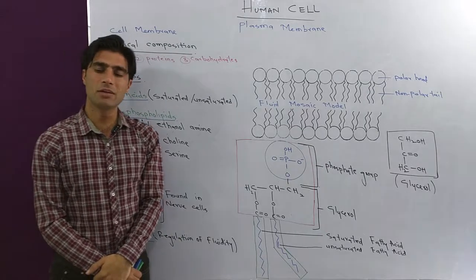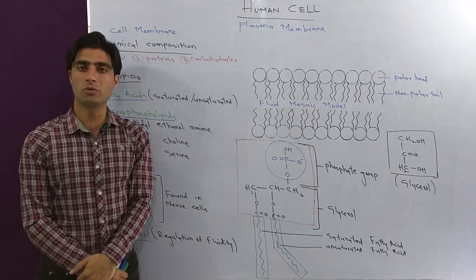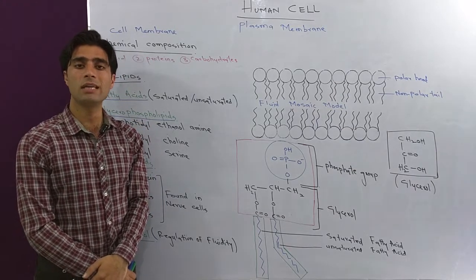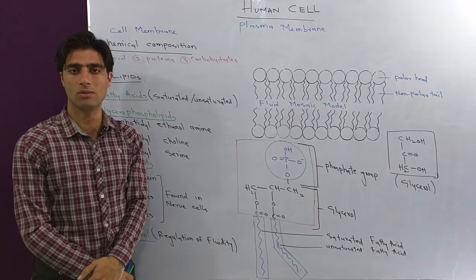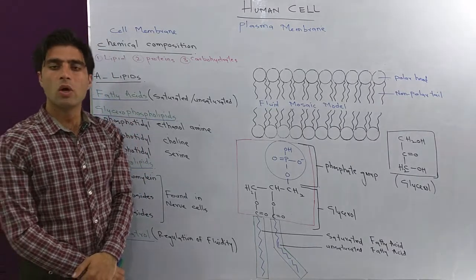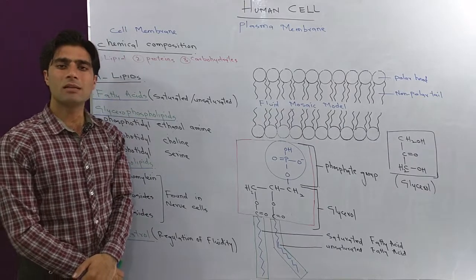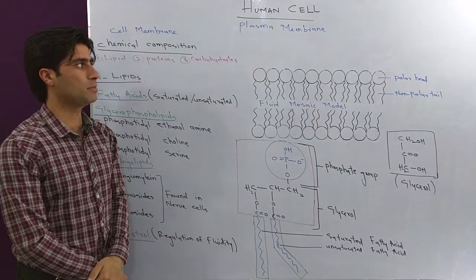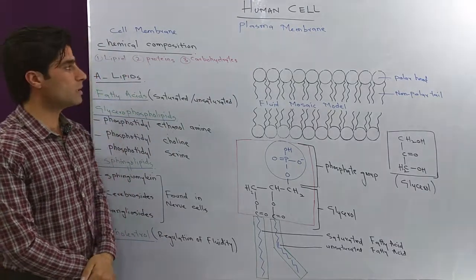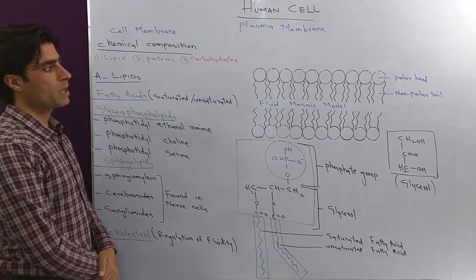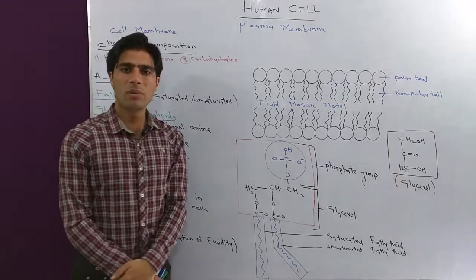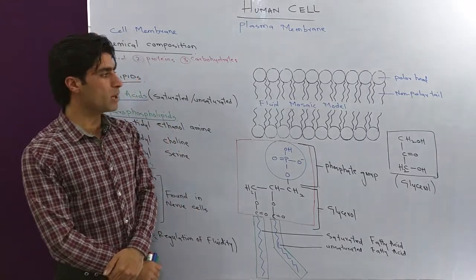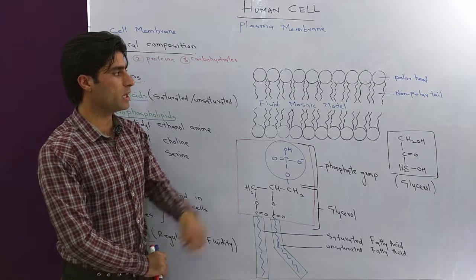Now we will move towards the chemical composition of plasma membrane. As I told you in my introduction to biochemistry lecture, biochemistry deals with the chemical composition of living cells and tissues. Among the organelles of living cells, one is the plasma membrane, which is found on the outer covering of cells.